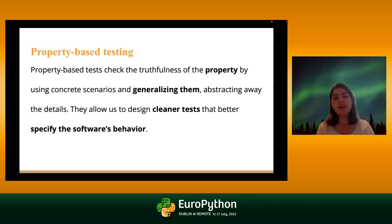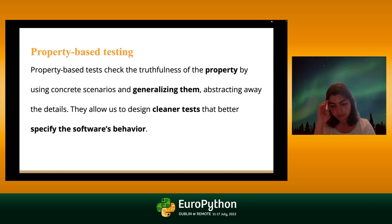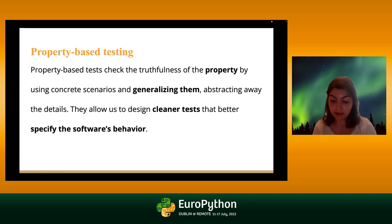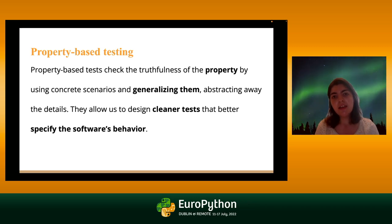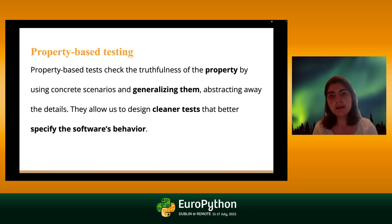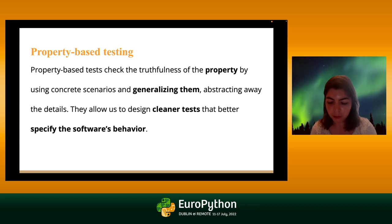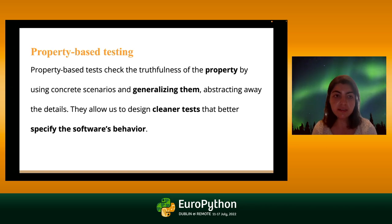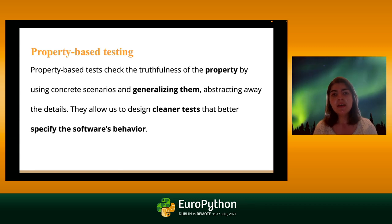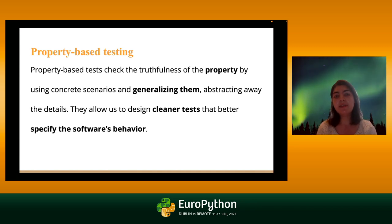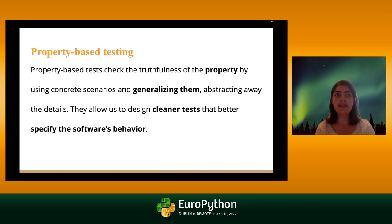When we check for elements of a property that should always be true, rather than writing each value we want to test, we allow the program to test a variety of input values in a single test. In Property-Based Testing, we generate the input data — we don't give fixed test data. When we generate this data, it's very random, but at the same time it's predictable, and we'll see how.